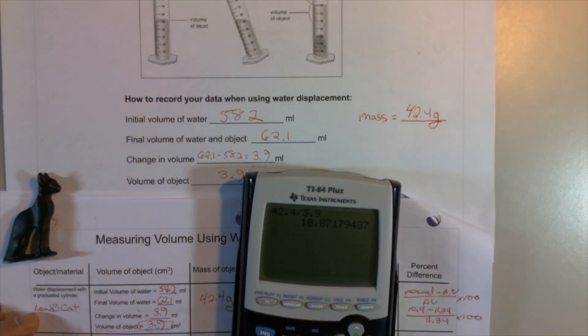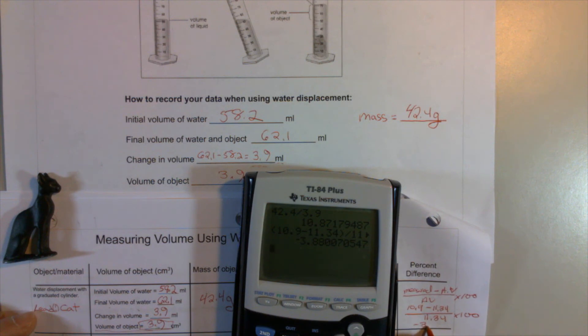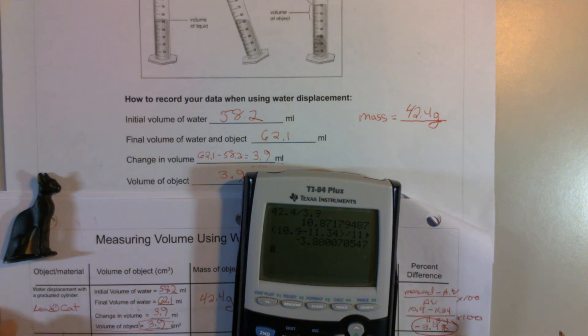And let's calculate that. Don't forget that the top has to be in parentheses. And I get negative 3.9 percent. And of course, the negative means that my measured value was below the accepted value. So I take that as evidence that the cat really is made out of lead, because anything under 5% for this lab is excellent.